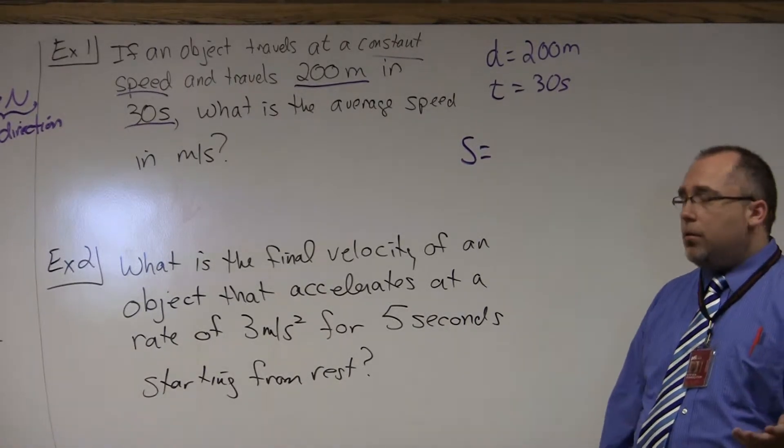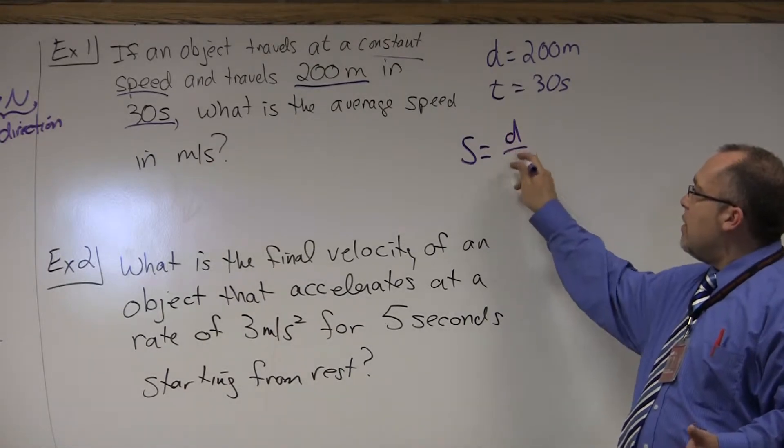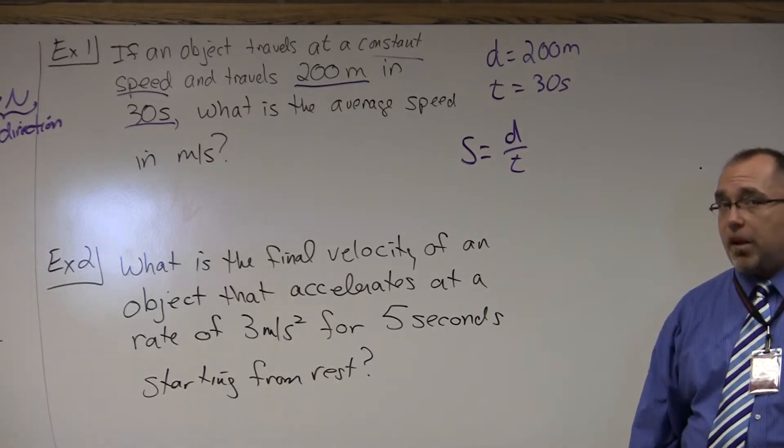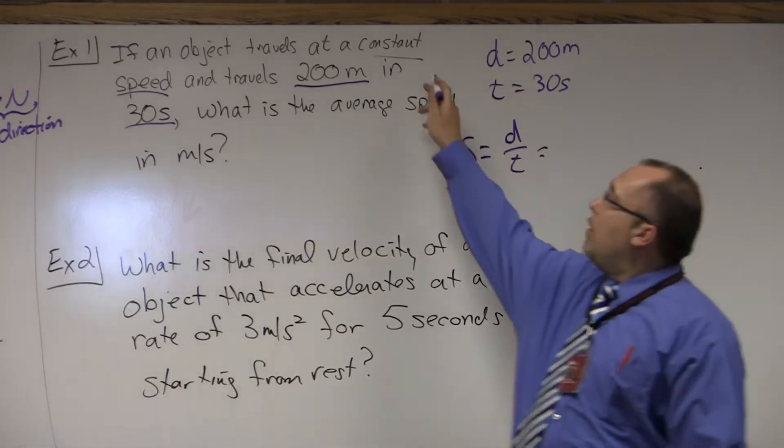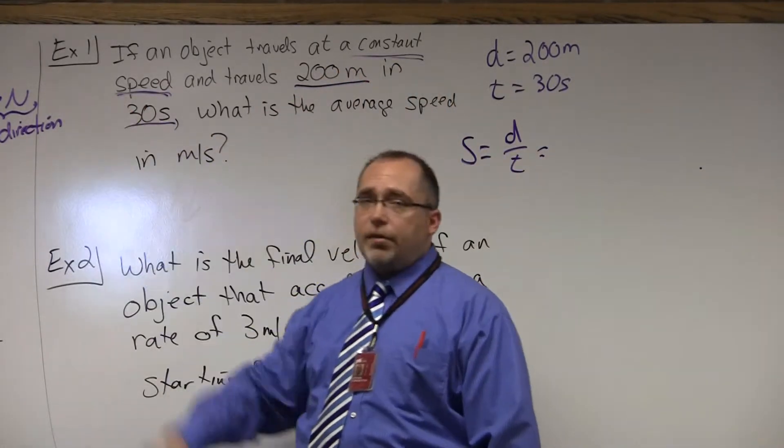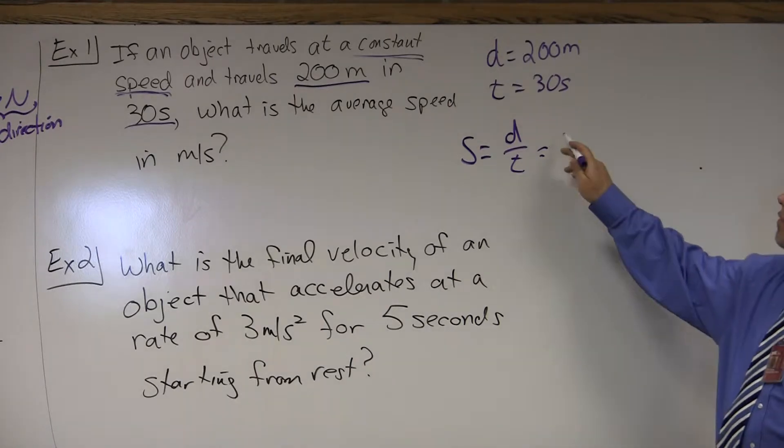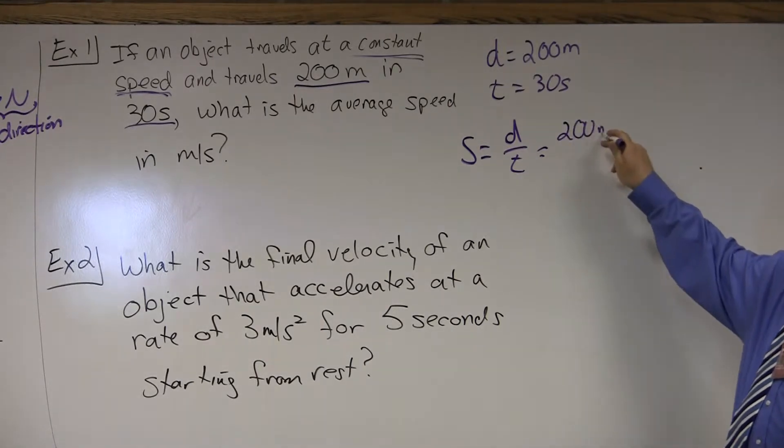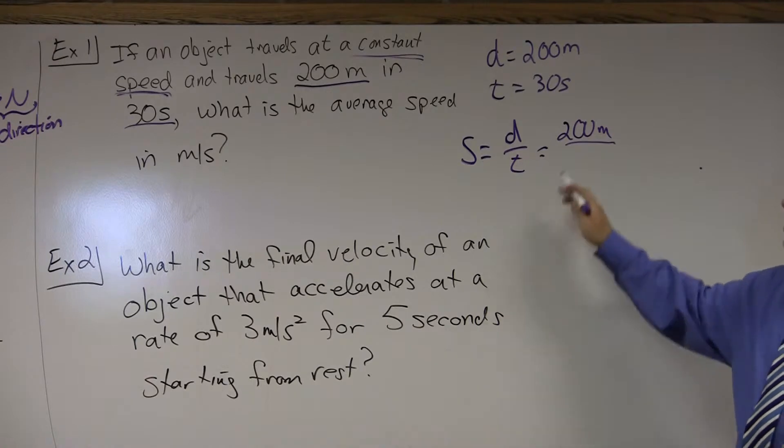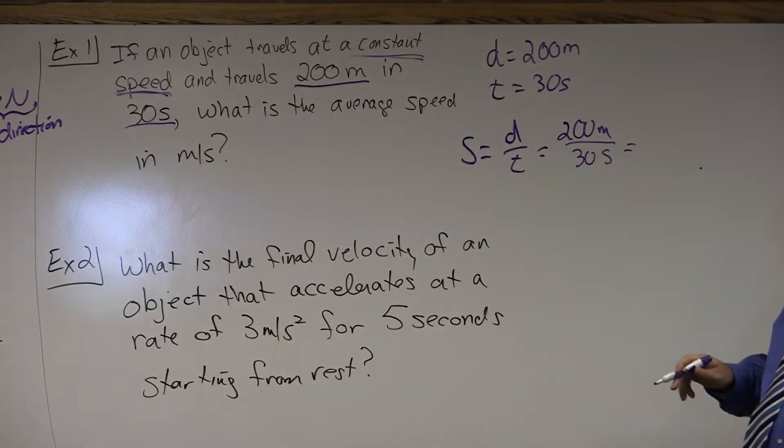If we think back to speed, that was just distance divided by time. Same as velocity with a constant velocity or a constant speed. So, we simply take our distance of 200 meters, divided by the time of 30 seconds, and basically we have 200 divided by 30.